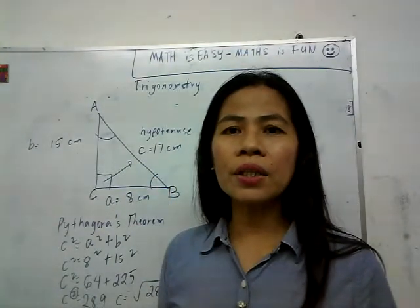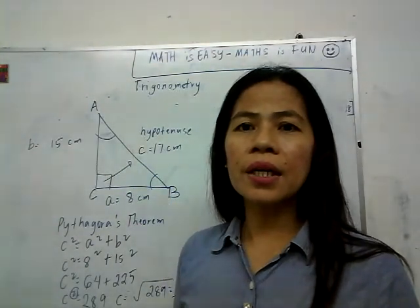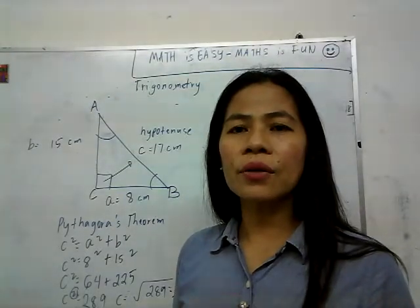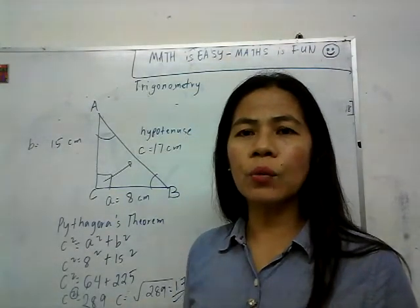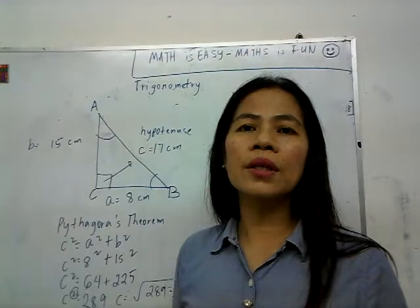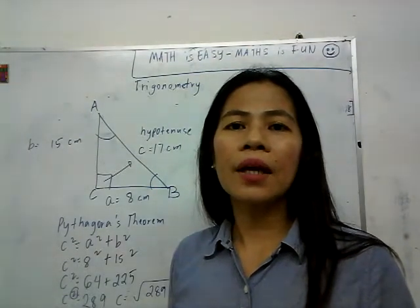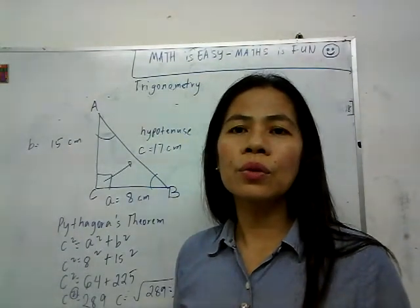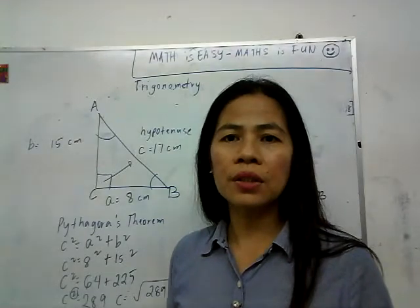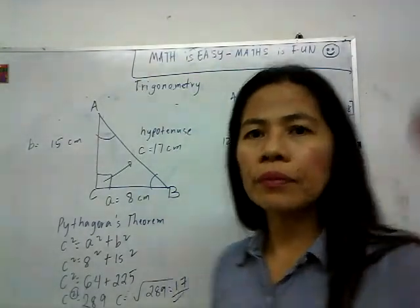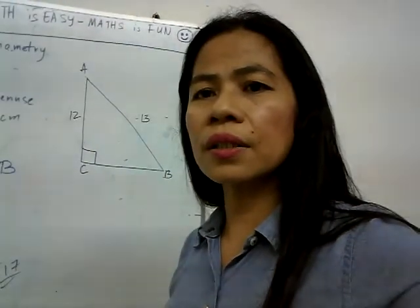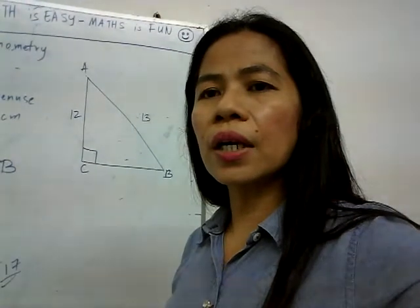How about a triangle where the longest side or the hypotenuse is given and we need to find one of the shorter sides? We are going to solve the next triangle now.